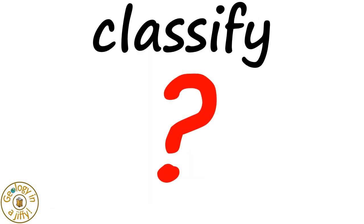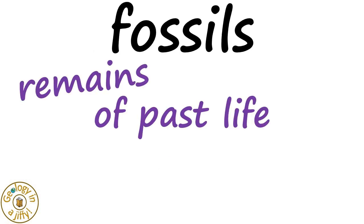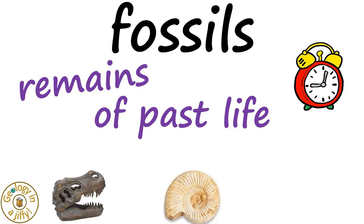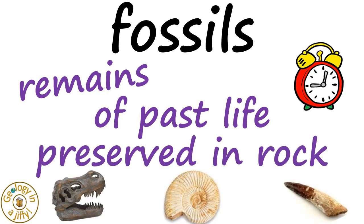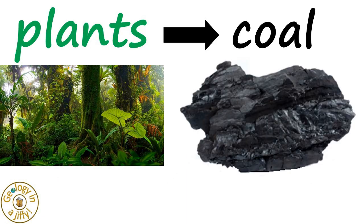Another way to classify a sedimentary rock is by using the presence of fossils — the remains of past life that lived millions of years ago, such as bones, shells and teeth, that are now preserved in our sedimentary rock. An example being ancient tropical rainforests that are now preserved as coal.